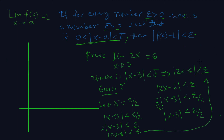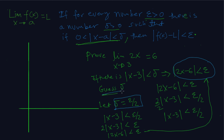So 2x minus 6 is less than epsilon. This is exactly what we wanted. We have shown 2x minus 6 is less than epsilon, provided that delta equals epsilon over 2. And this is how you prove it.